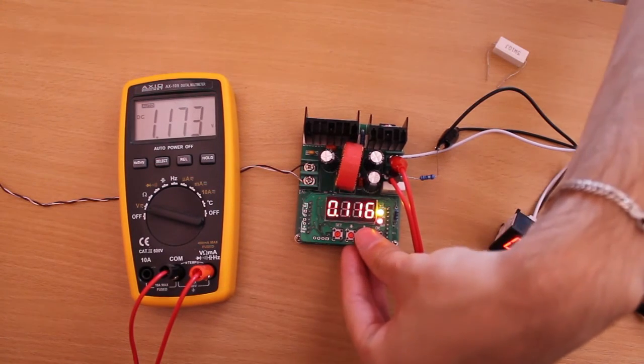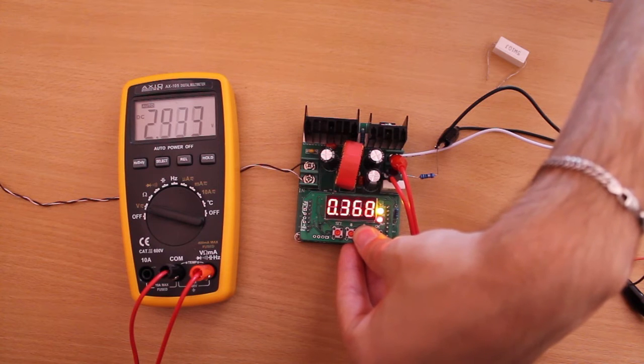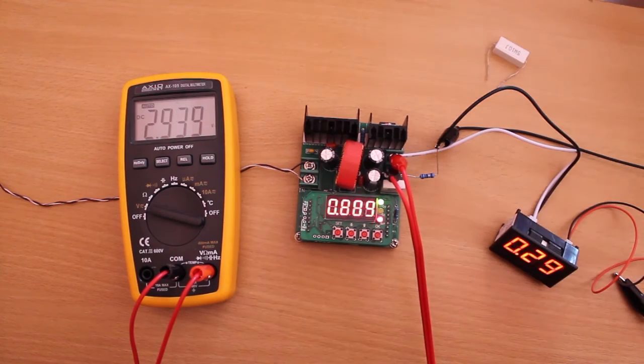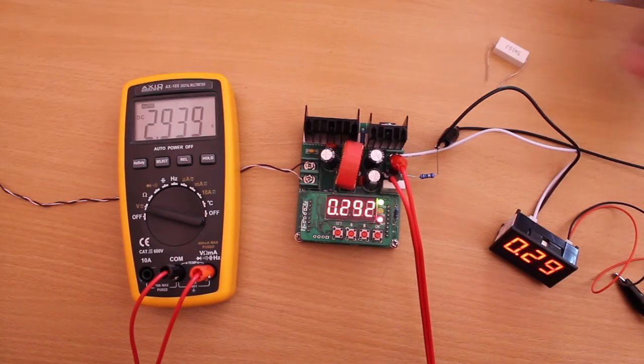Let's raise the current limit to half an amp again. Then, the device goes back into constant voltage mode.